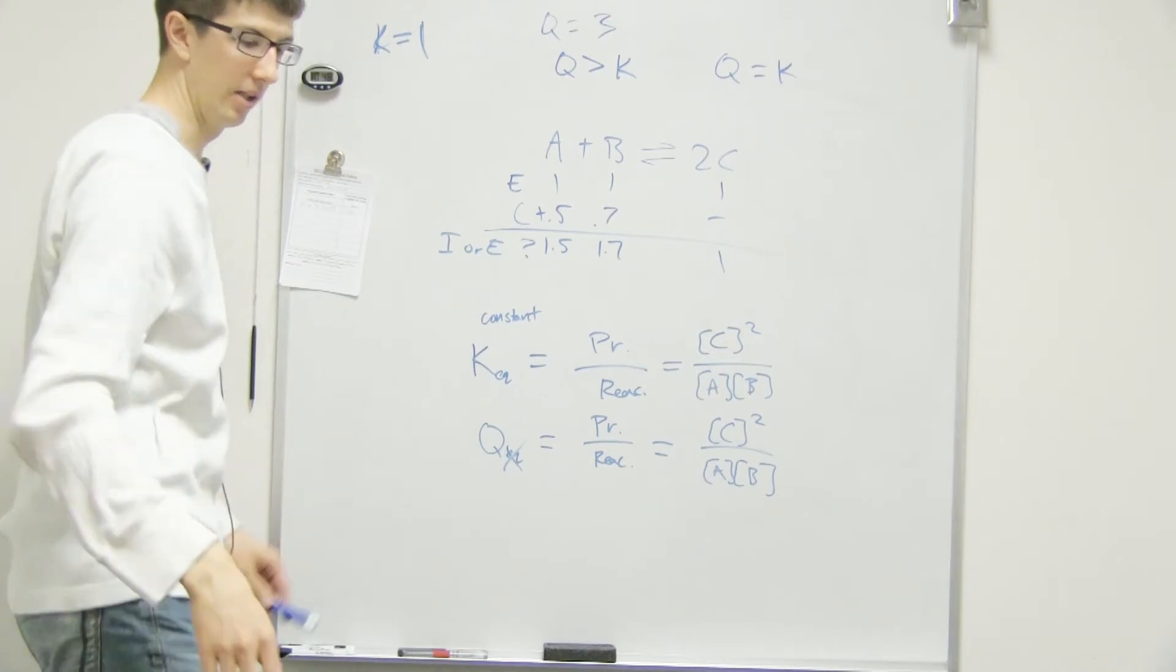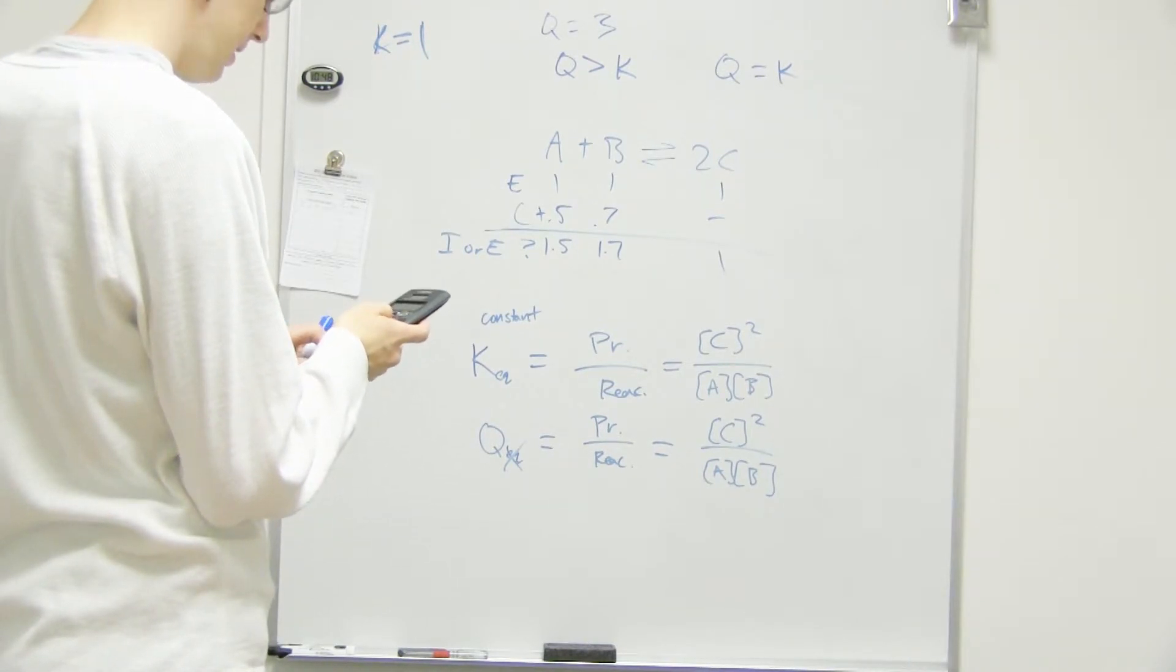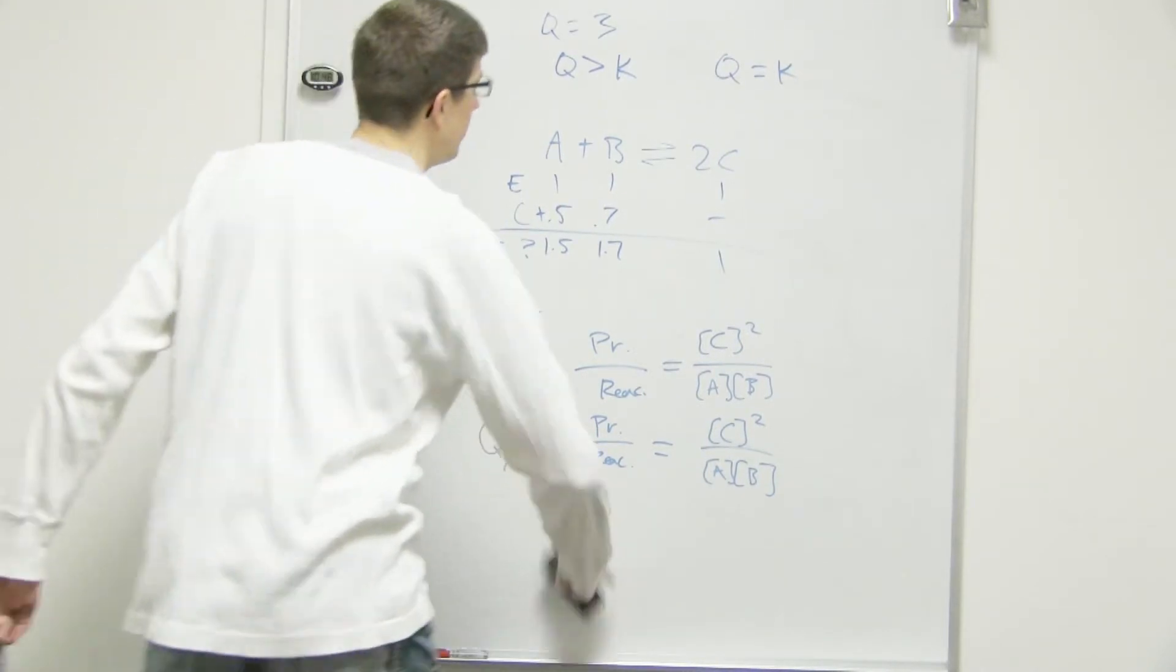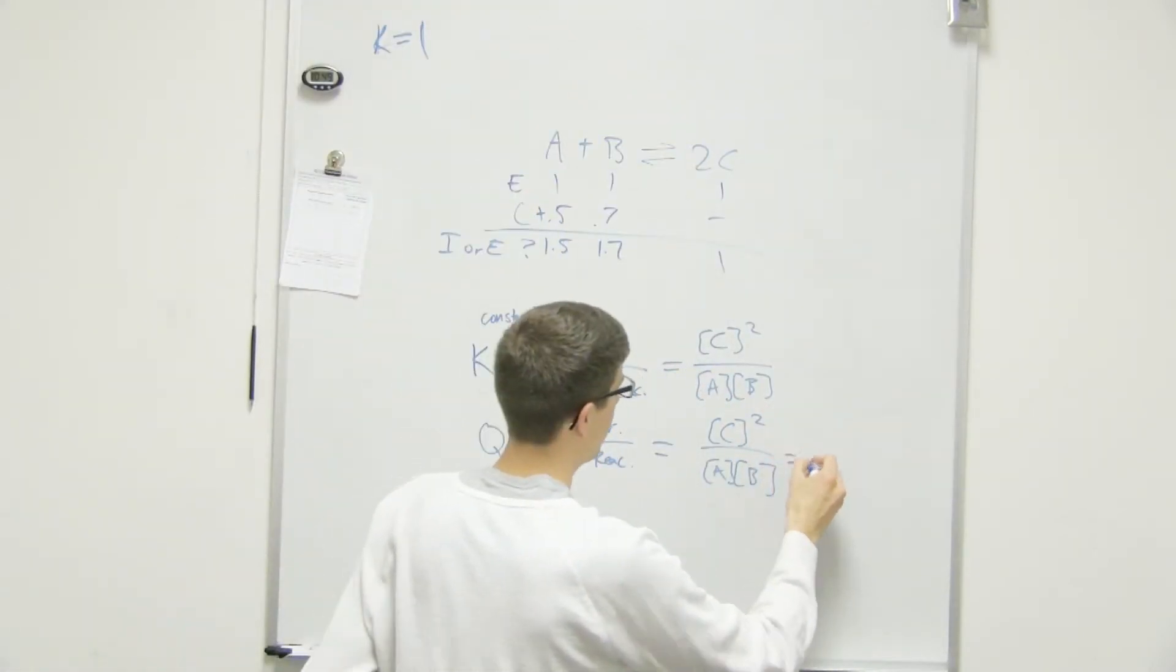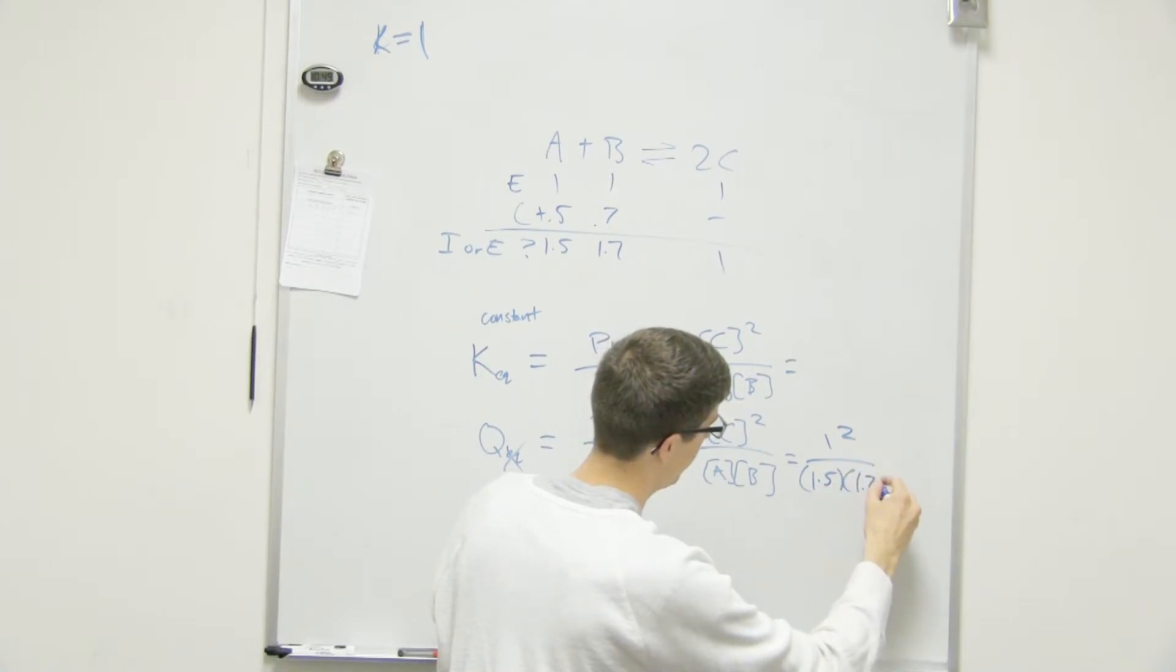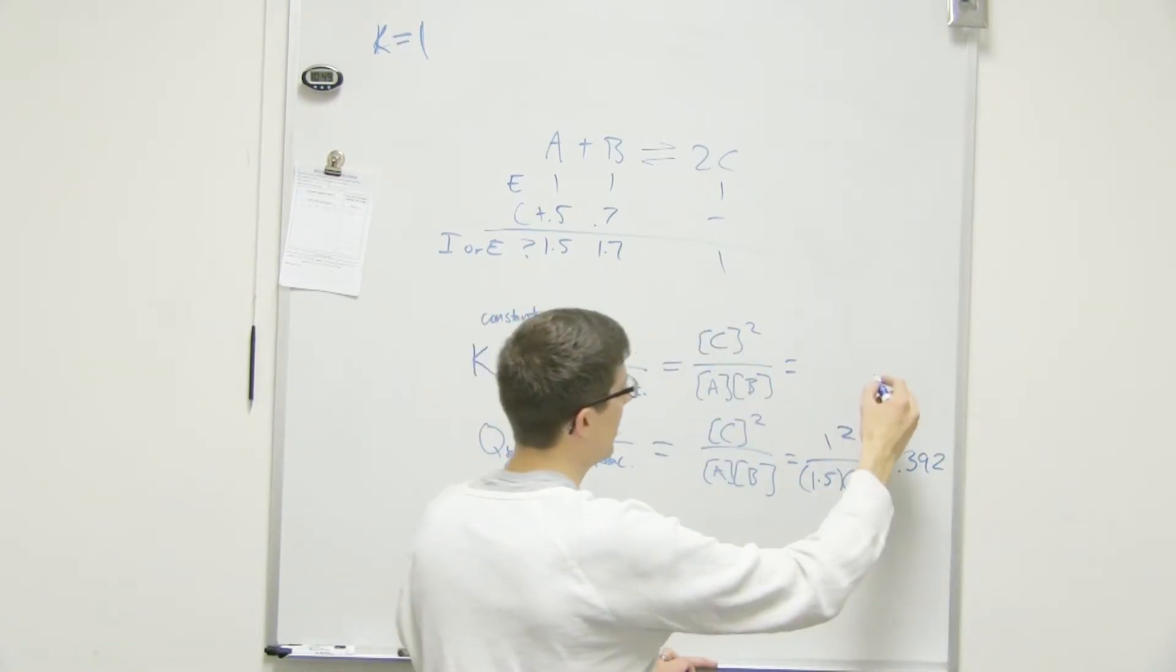So we'll use Q, right? So, okay, let's do that for fun. So we have 1 squared divided by 1.5 times 1.7. 0.392. Okay, so we got a Q. Let's erase these. It's not confusing. Let's see. So as a matter of fact, I'm going to, let's plug that in here. 1 squared over 1.5 times 1.7. Okay. And we ended up getting what? 0.392. Okay, 0.392.